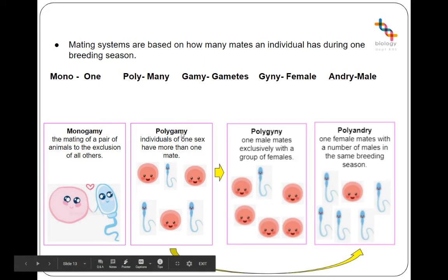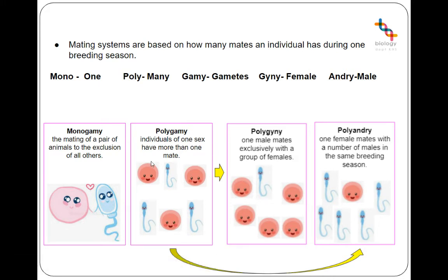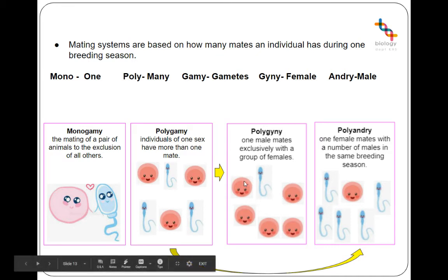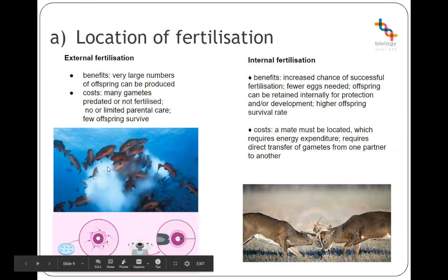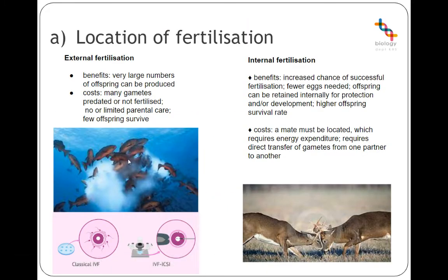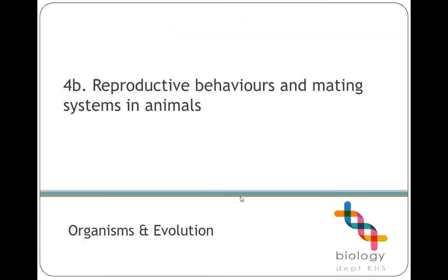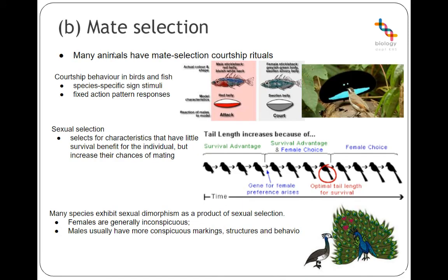In external fertilisation scenarios like spawning, you essentially have a sperm cloud and an egg cloud, so you don't know how many males a female has mated with or vice versa — which can be considered both polygyny and polyandry simultaneously. There is quite a lot to cover across these slides, but it all follows a common theme.